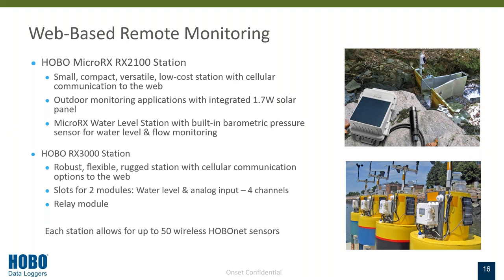All of our RX stations, regardless of whether it's the 2100 series or the 3000 series, allow you to connect up to 50 of our wireless sensors. Each wireless sensor has a range of about 1,500 to 2,000 feet line of sight, and they also form what we call a self-healing mesh network. So if a sensor is out of range from the RX station, it can pass its signal through other sensors in line, making up to five hops to get that signal back to the RX station.